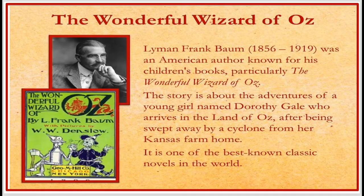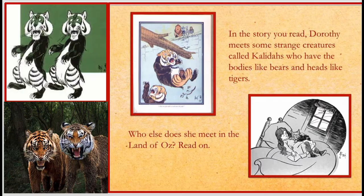This story revolves around Dorothy — she's the main character. In this story, Dorothy meets some strange creatures called Kalidas who have bodies like bears and heads like tigers.